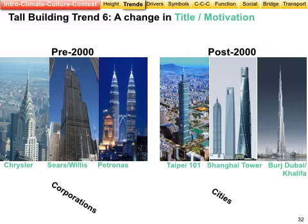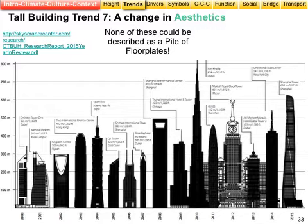Another change has been motivation and title. Until the turn of the century, most tall buildings were representative of corporations — even private investments like the Chrysler or the Woolworth. Since the turn of the century, the great tall buildings tend to be named after their country or their city, like the London Shard, Taipei 101, Shanghai Tower, Burj Khalifa — which started off as Burj Dubai. Certainly these are no longer simply extrusions of floors. The combination of prestige, shape-making, computer design, mixed use, and height has meant that buildings are no longer just an extrusion of a floor plate.